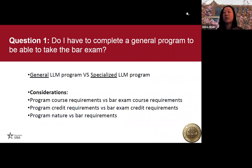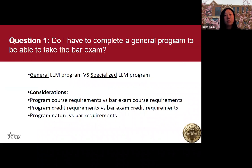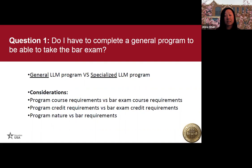You want to make sure that the courses you're required to take in your LLM program count towards the bar exam. In a general LLM program, you won't have much trouble as the program is fairly flexible with course selection. But with a specialized program, some courses may not satisfy bar requirements. For instance, the DC bar requires you to take 26 credits, each substantially concentrated on a single subject tested on the Uniform Bar Exam. In a really specialized program like environmental law, you may not be able to meet the bar requirement without taking many more credits.